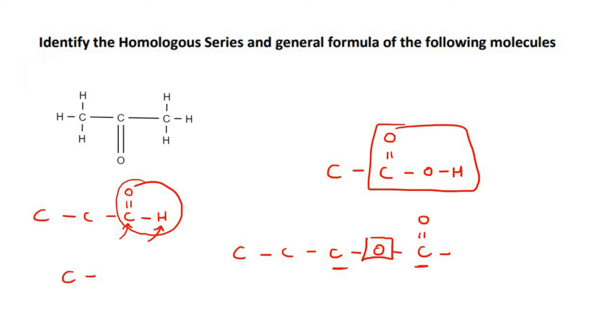But if you have a double bond oxygen and the carbon that it is attached to is in between two other carbons, then it is a ketone. So that's the answer for this one. The homologous series is going to be a ketone.